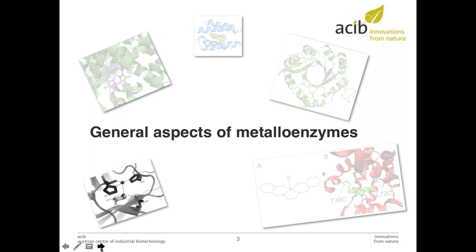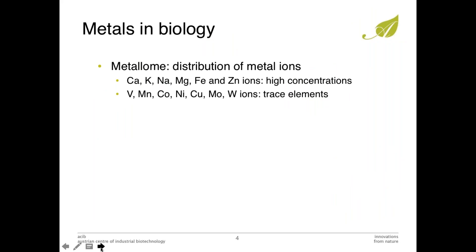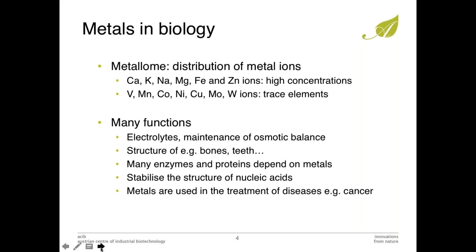Generally, I was at a conference some years ago where there was a lot of discussion about the exact definition of a metallome. Like you have the proteome, the glycome, and everything — you also have a metallome. Basically one of the easiest definitions is that it's the distribution of metal ions in a certain organism. Some metals are more abundant, some are only there in trace amounts. They have many functions: they work as electrolytes, they are in the structure of bones and teeth, and of course many enzymes are dependent on metals. They are also involved in the stability of nucleic acids and used a lot in medicine.